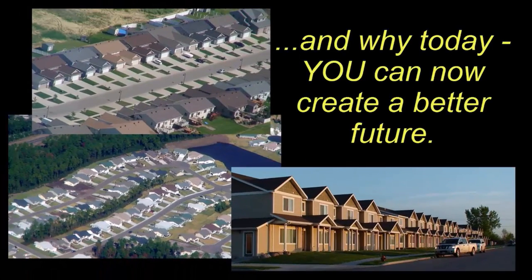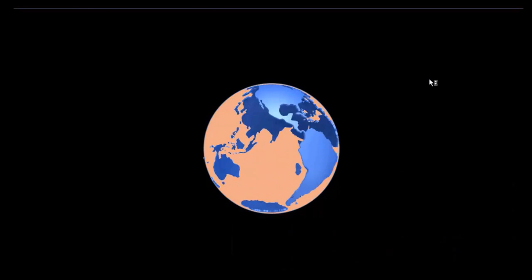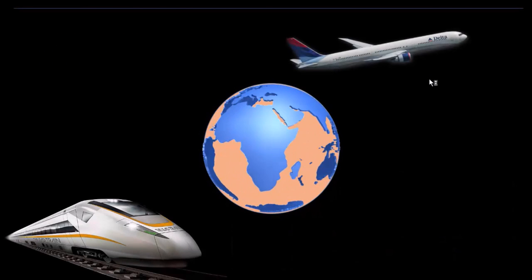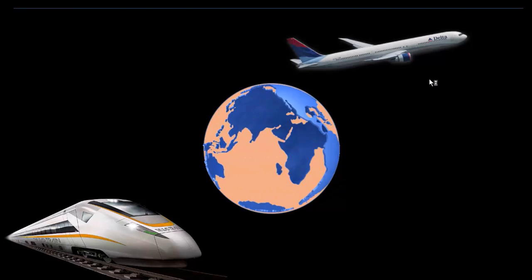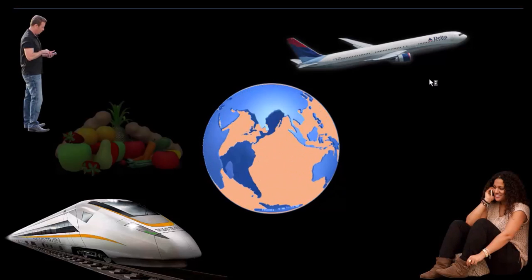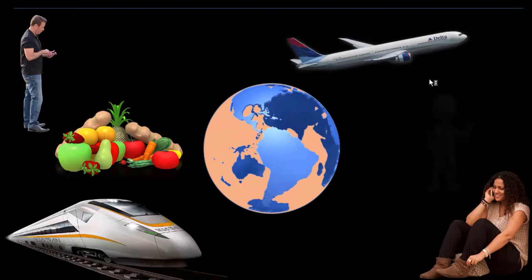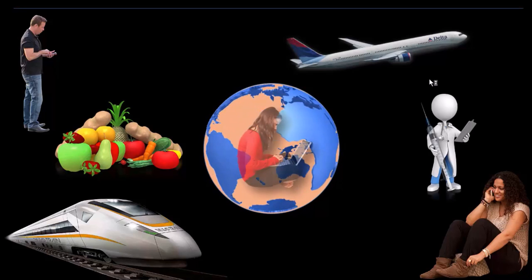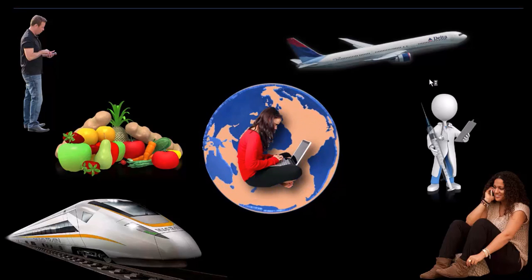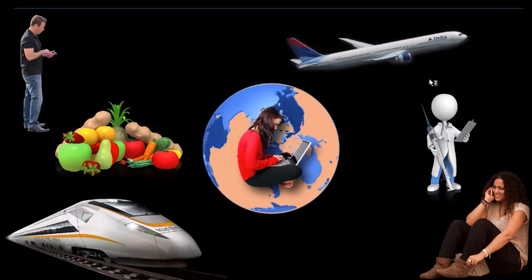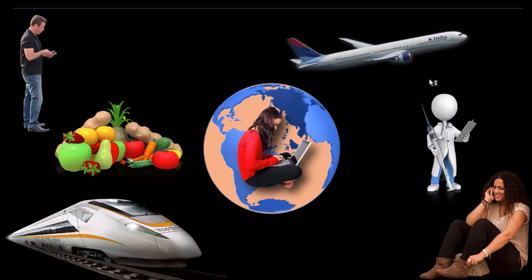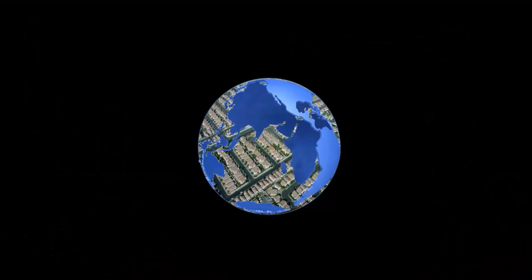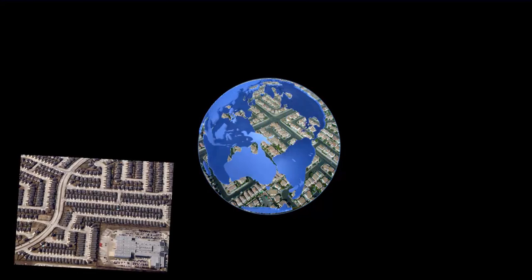The world we live in evolves and improves at a fast pace, improving the ways we are transported, the way we communicate, the quality of the food we eat, and the improvements in medicine that allow us to live longer. The technological explosion in both software and hardware has provided a higher standard for everyone, with one large exception: the design quality of the very neighborhoods you may live in.